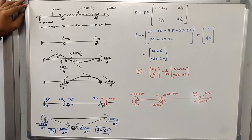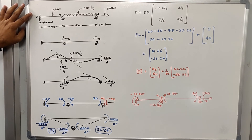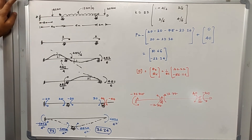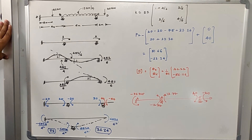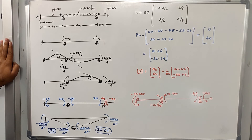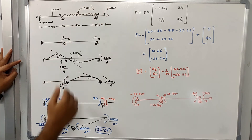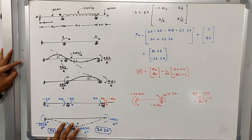The next step is to determine the force matrix. Referring to the slope deflection problem, joint B is subjected to sinking of 10 mm. The given values are E = 200 × 10⁶ kN/m² and I = 100 × 10⁻⁶ m⁴. To develop the force matrix, we calculate the fixed end moments due to loading and also the moments due to sinking or settlement of the support at joint B.